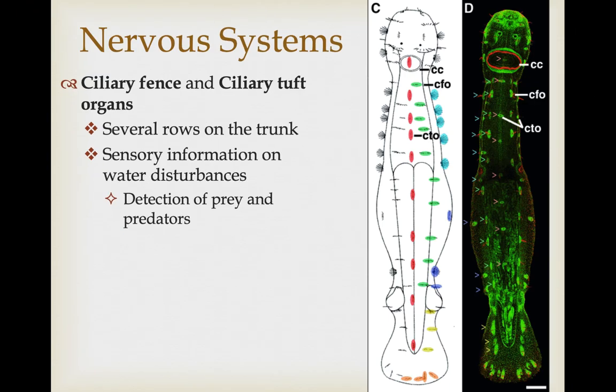Other sensory structures lining the body are ciliary fence organs and ciliary tuft organs — rows of these run the length of the trunk and help detect the distribution of water disturbances, potentially detecting nearby prey and predators. A study mapped these out: the ciliary trunk organs (CTO, shown in red) and ciliary fence organs (CFO, shown in green) run down the length of the body.